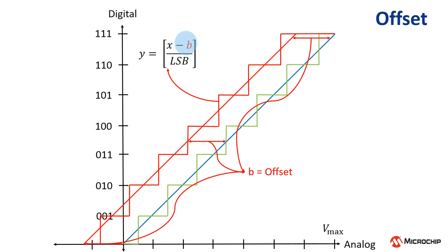If we examine the plot, we see this is a constant error for any input value. What other impact does it have? The ADC has a specific input range. In this case, it is zero to Vmax. The offset in the graph would cause the ADC to output one LSB at zero volts, skipping over zero LSB.